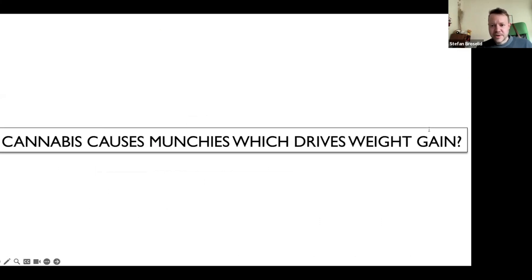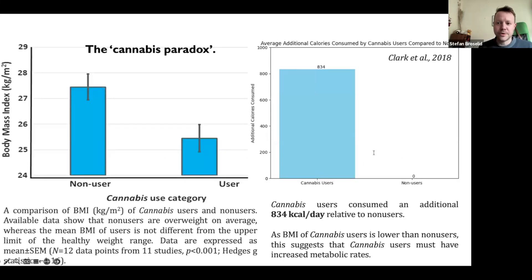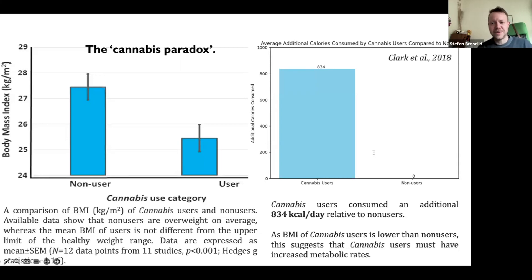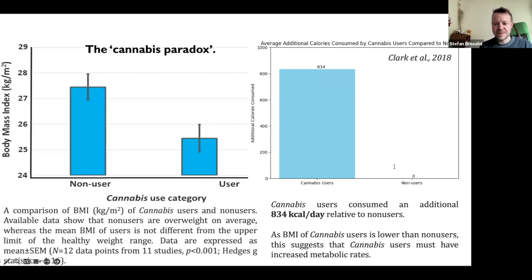This is a rather common belief about cannabis and cannabis users — we know cannabis consumption acutely drives appetite for junk food. Does this mean we are predisposing patients to future metabolic problems by prescribing medical cannabis? The answer is a resounding no. Many research studies have replicated these results: regular cannabis users have lower BMI and increased metabolic health compared to non-users. Furthermore, cannabis users consumed 834 additional calories compared to non-users without driving weight gain or metabolic problems. The reason is quite simple: chronic use of THC has led to a significant down-regulation of central CB1 receptors, attenuating the effects of CB1 activation over time.